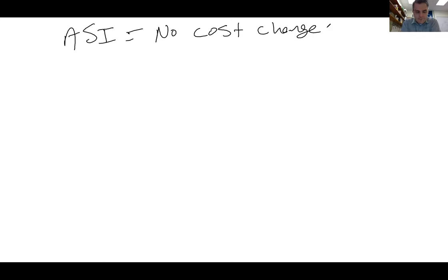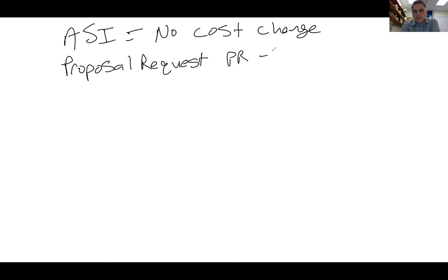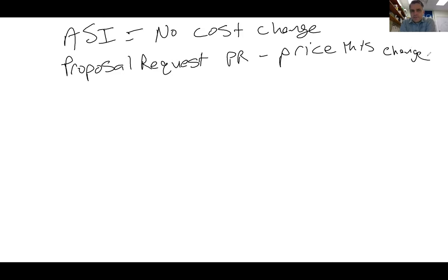Another way a change order happens is a Proposal Request, or PR — the architect sends out a request asking the contractor to price a change. They're not necessarily telling you to do the work; it's more of a question saying, how much would it cost if we decided to change this? For example, if they wanted to add a window, they might say, give me a proposal so we can make a decision.